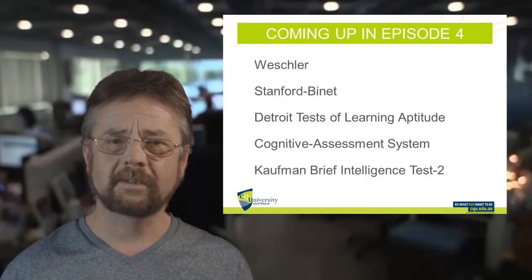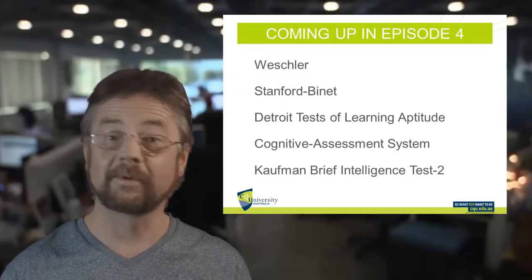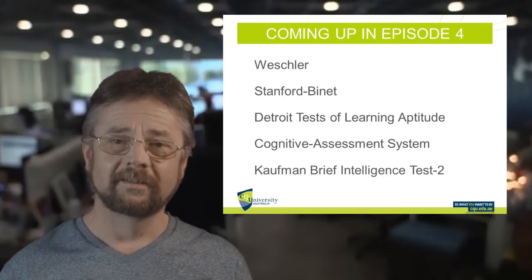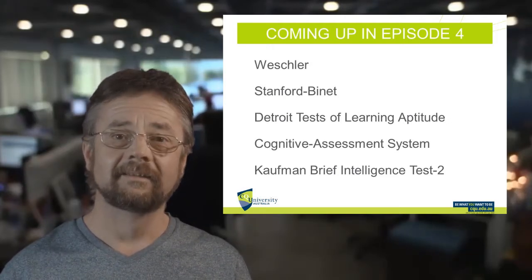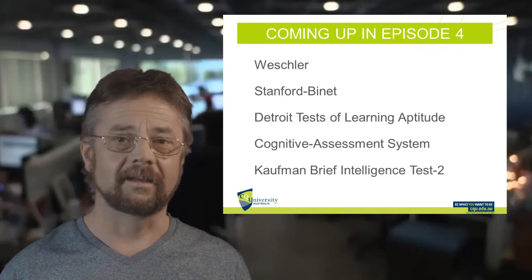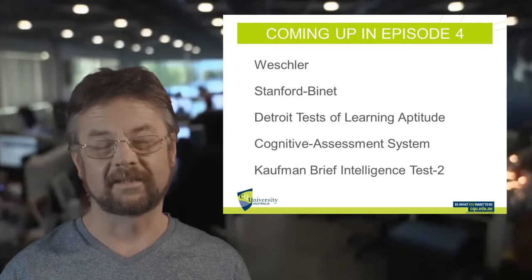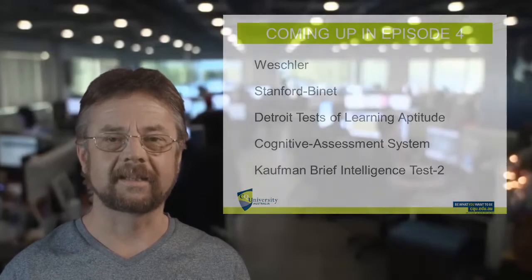That's all for now, folks. Coming up in episode 4: our first proper look at intelligence tests — it'll help us figure out what type of moron we are. We will look at the Wechsler, Stanford-Binet, the Detroit, the Cognitive Assessment System, and Kaufman's — all of those are tests, by the way. We'll talk about that in the next episode, so I shall see you then, or see you in class.